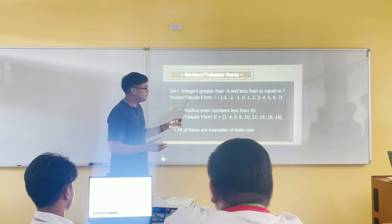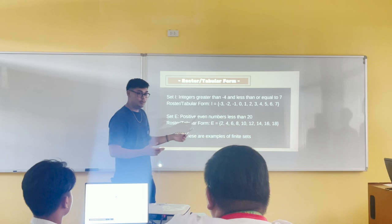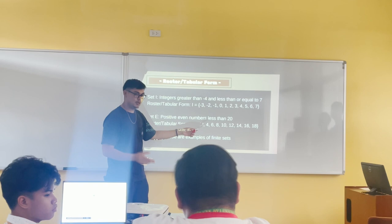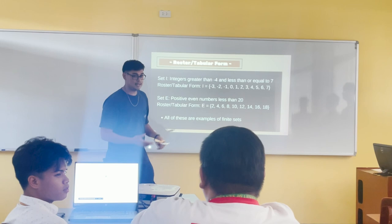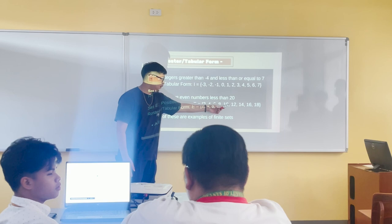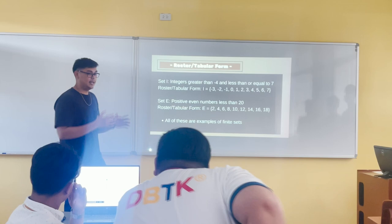Set A — positive even numbers less than 20. For the roster tabular form, we list down in curly braces: 2, 4, 6, 8, 10, 12, 14, 16, 18. Those are the positive even numbers. We do not include negative numbers.